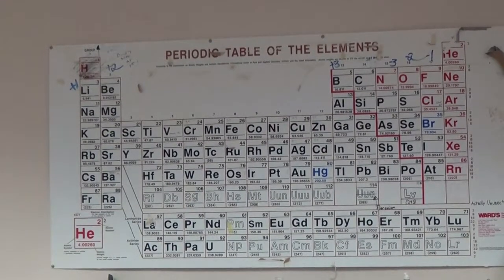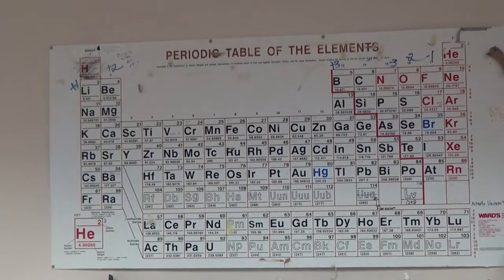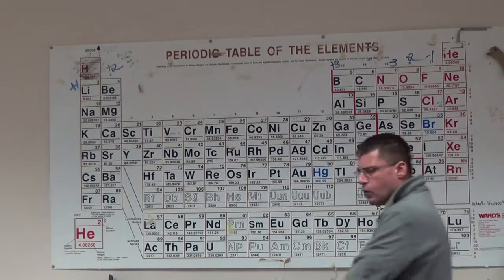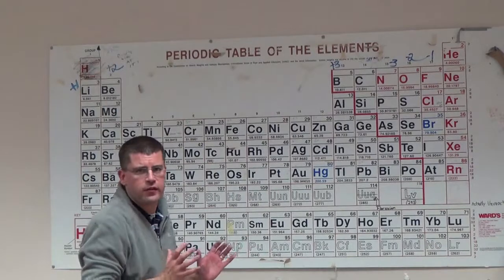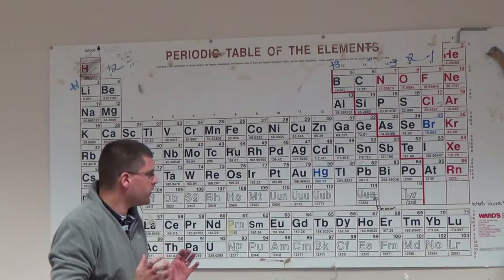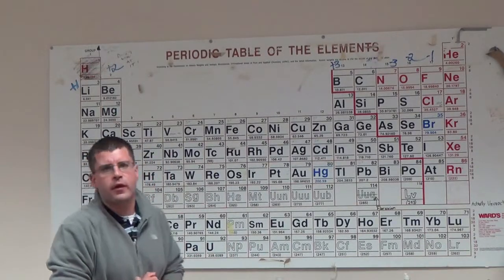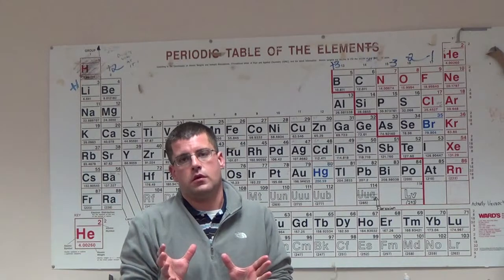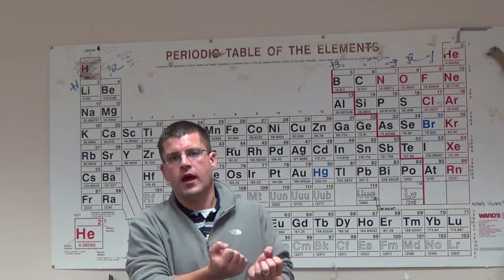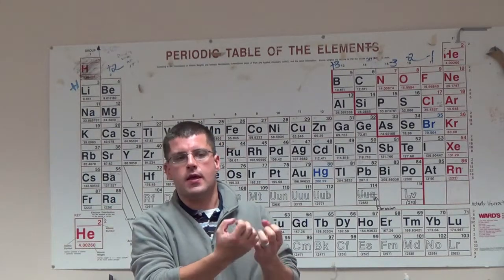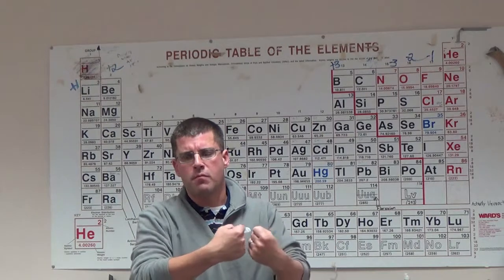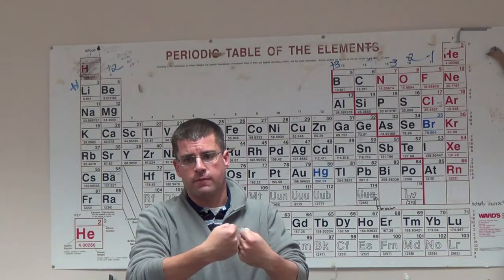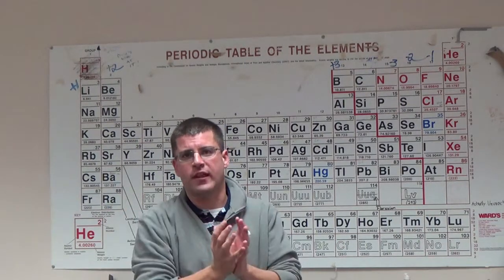Ionization energy. We're going to make this one a little different. We're going to go over the general trend of ionization energy on this video. We talked about before that ionization energy is generally the ability of a valence electron to be removed from an atom's outermost energy level.